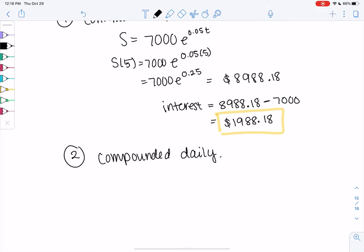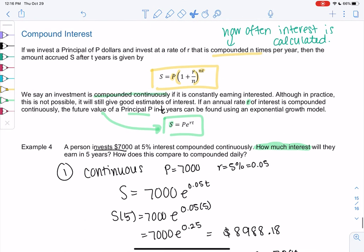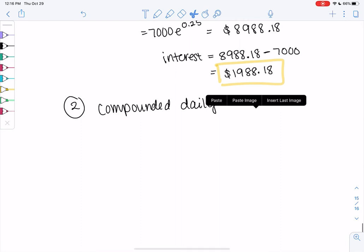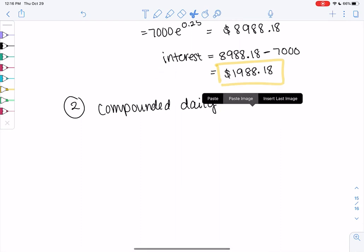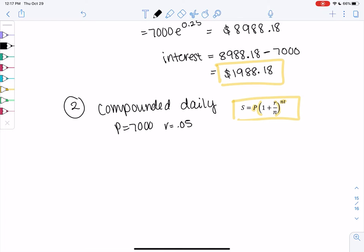So we're going to use the equation without the E. So we have S equals P times parentheses 1 plus R over N to the Nt. So P is still 7,000, R is still 0.05, and then N is how often we're compounding money per year.